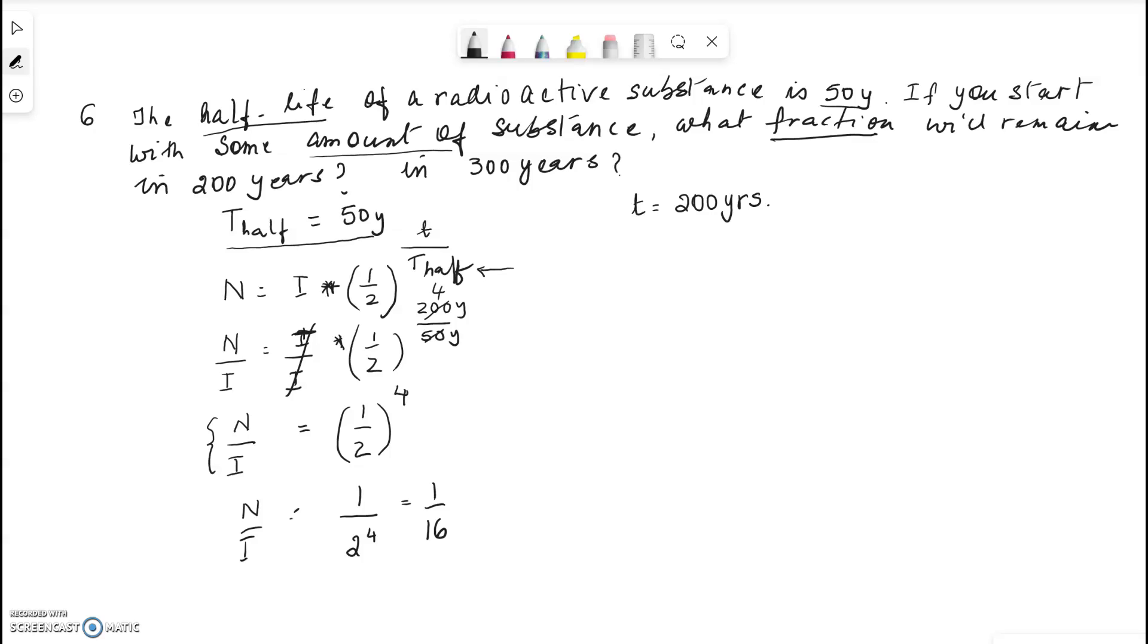So what this tells us is that if the half-life of a radioactive substance is 50 years, then in 200 years, it'll be one-sixteenth of itself. No matter how much you start with, what remains is only one-sixteenth of it. A tiny fraction of it is left over.